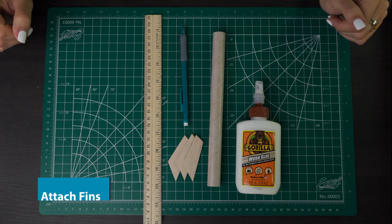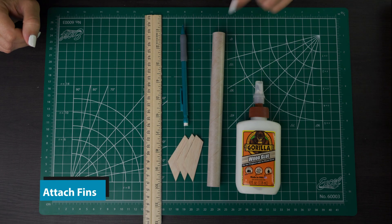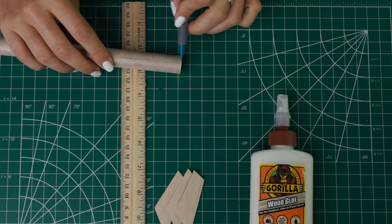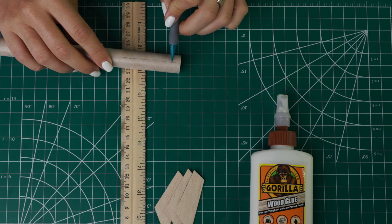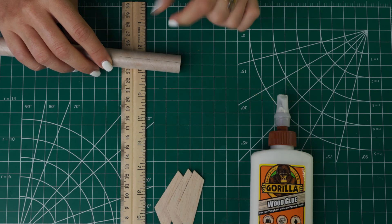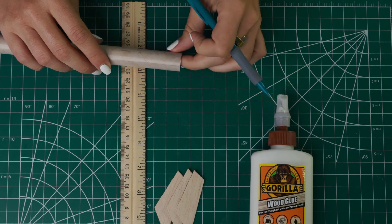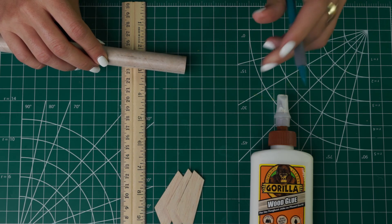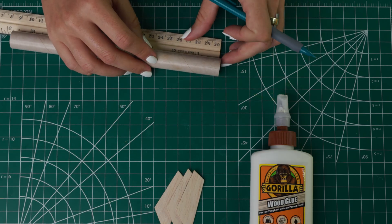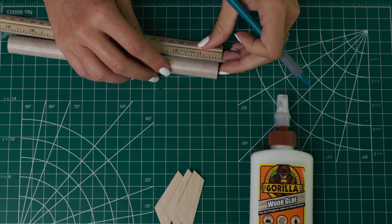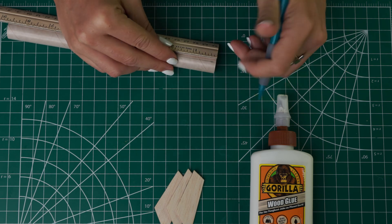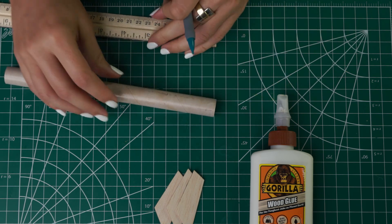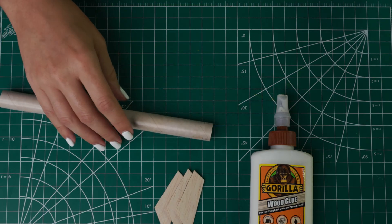Next up we are going to attach the fins and we have a couple more marks we need to make on the body tube here. We're going to make a line on each of these fin lines at three eighths of an inch up from the end and that's where the bottom of our fin is going to be. And then on our launch lug line we're going to make a line two inches from the end of the body tube. Now that those marks are done we can attach our fins.